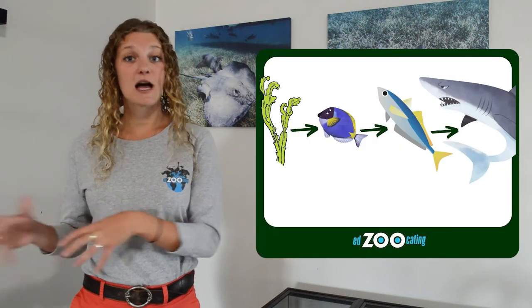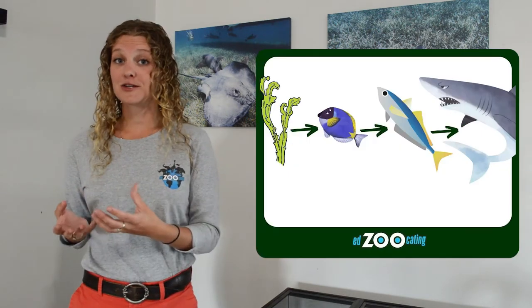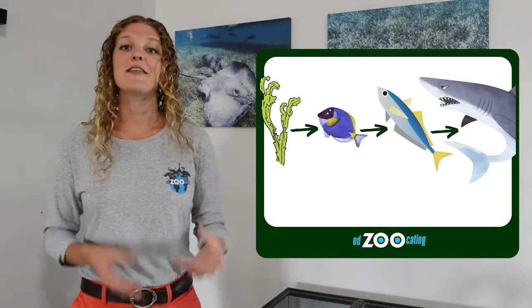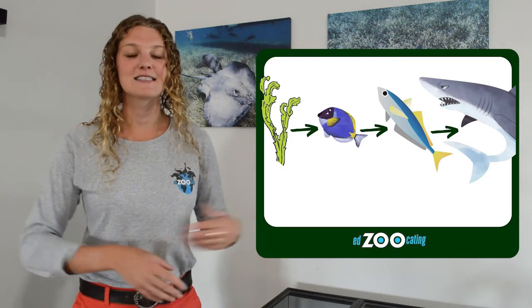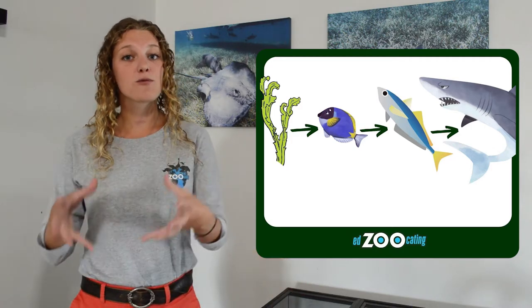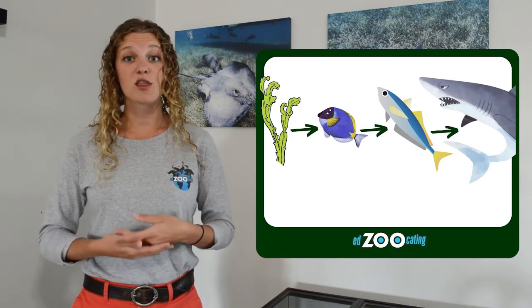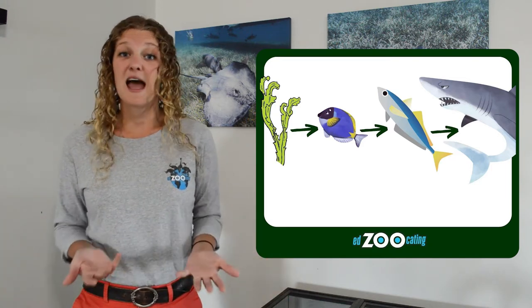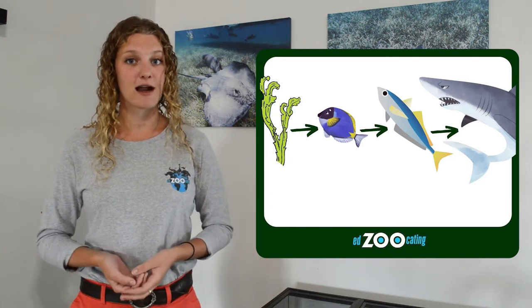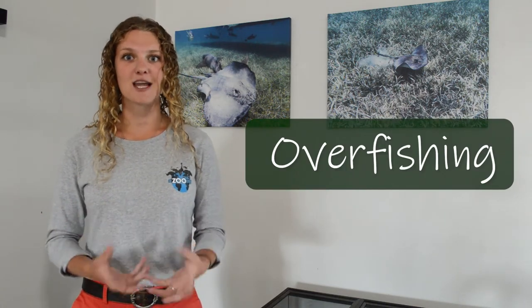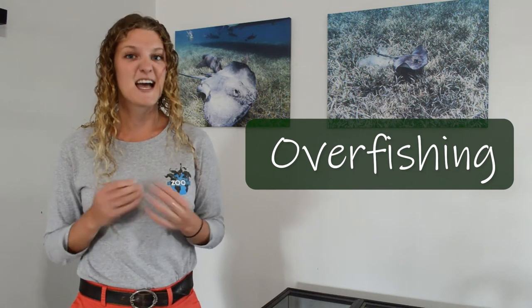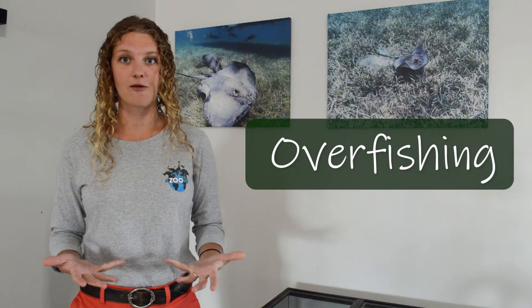The sharks, thinking of that food chain we just talked about, help make sure that there's not too many large fish. The large fish help make sure there's not too many small fish, and the small fish make sure that the seagrasses don't grow out of control. So if we removed one part of that food chain, it would throw the whole food chain out of balance and potentially affect the entire environment. So let's pretend — let's remove the large fish from that food chain. And this is actually a problem that's happening with overfishing. Humans are fishing a lot of these large fish to eat for ourselves, just kind of throwing the ocean environment out of balance.